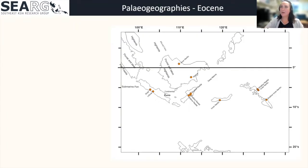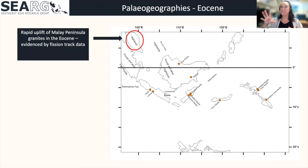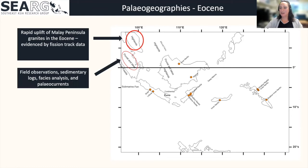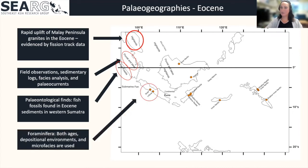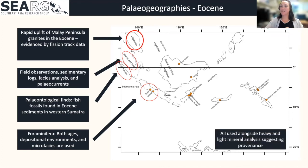I just wanted to show a very quick blueprint before I move on to the actual paleogeographies, just to show you how they're constructed. The tectonic reconstructions are the ones from Robert Hall. On the Malay Peninsula, it's a highland because we have fission-track data from apatite that show rapid uplift of the area at that time. In Sumatra, we have field observations such as sedimentary logs, facies analysis, and paleocurrents that tell us the main deposition was fluvial-lacustrine. We have paleontological finds such as fish fossils in the Eocene sediments in West Sumatra, and of course all of our foraminifera. Each of these orange spots are foraminifera from the late Eocene, giving us depositional environments and microfacies. These are used alongside our heavy and light mineral analysis, which tells us where these depositional systems come from and the routing pathway that they've taken to get to the sink.